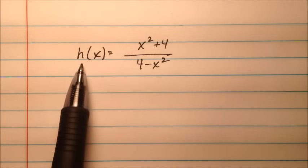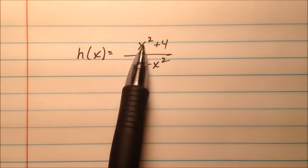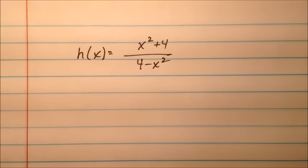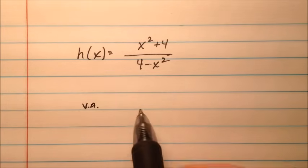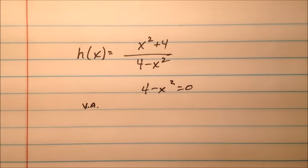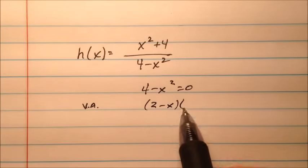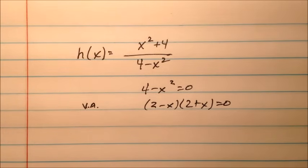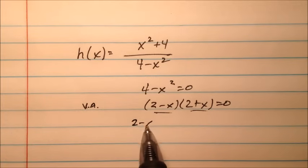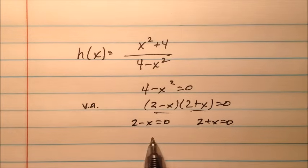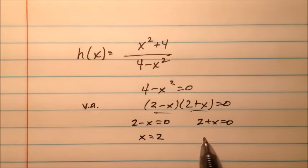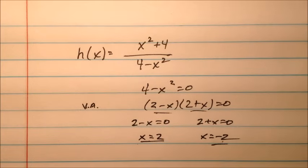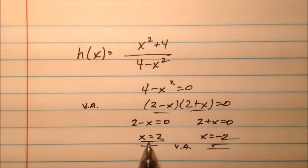For our third example, h of x equals x squared plus 4 over 4 minus x squared. Setting the denominator equal to 0, we factor it as 2 minus x times 2 plus x equals 0. Solving each factor gives x equals 2 and x equals negative 2, so we have two vertical asymptotes at x equals 2 and x equals negative 2.